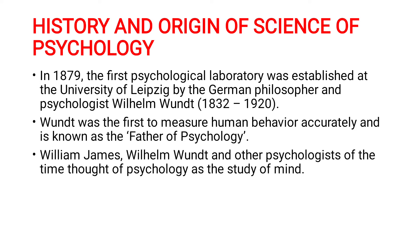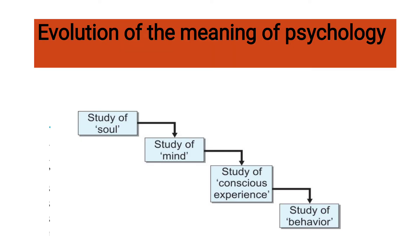Let's see how the evolution of the meaning of psychology changed from one period to another. Initially, psychology was considered the study of soul. Later, it was considered the study of mind. Then, it became the study of consciousness. Now, psychology is considered the study of behavior. So it shifted from soul, to mind, to conscious experience, and now to behavior.